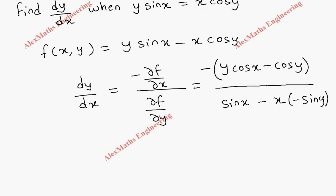Now let's rearrange this. In the numerator we can take the minus sign inside. So minus y cos x plus cos y whole divided by sin x plus x sin y.